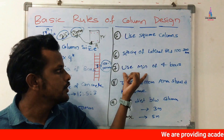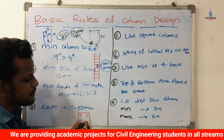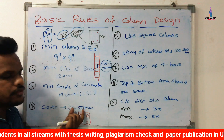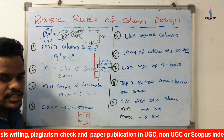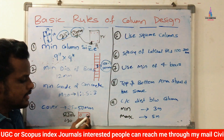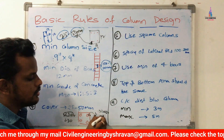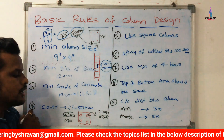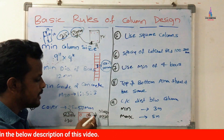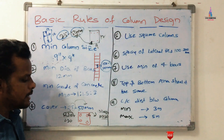The seventh rule: use a minimum of four bars. For any column section of 9 inches cross 9 inches, we must use a minimum of four bars. The spacing depends on the cover, which is 25 to 50 mm. For a 230 cross 230 mm section, 10% of 230 equals approximately 23 mm, but as per the fourth rule, the minimum cover is 25 mm. So the minimum number of bars for any column section is four.